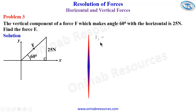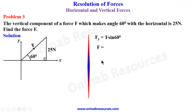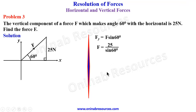We know the vertical component Fy is opposite over hypotenuse, which equals F sin 60 degrees. So F equals Fy over sin 60 degrees, which is 25 over sin 60 degrees. Pressing this in our calculator, we get the force F to be 28.9 newtons. And that is all for problem 3.